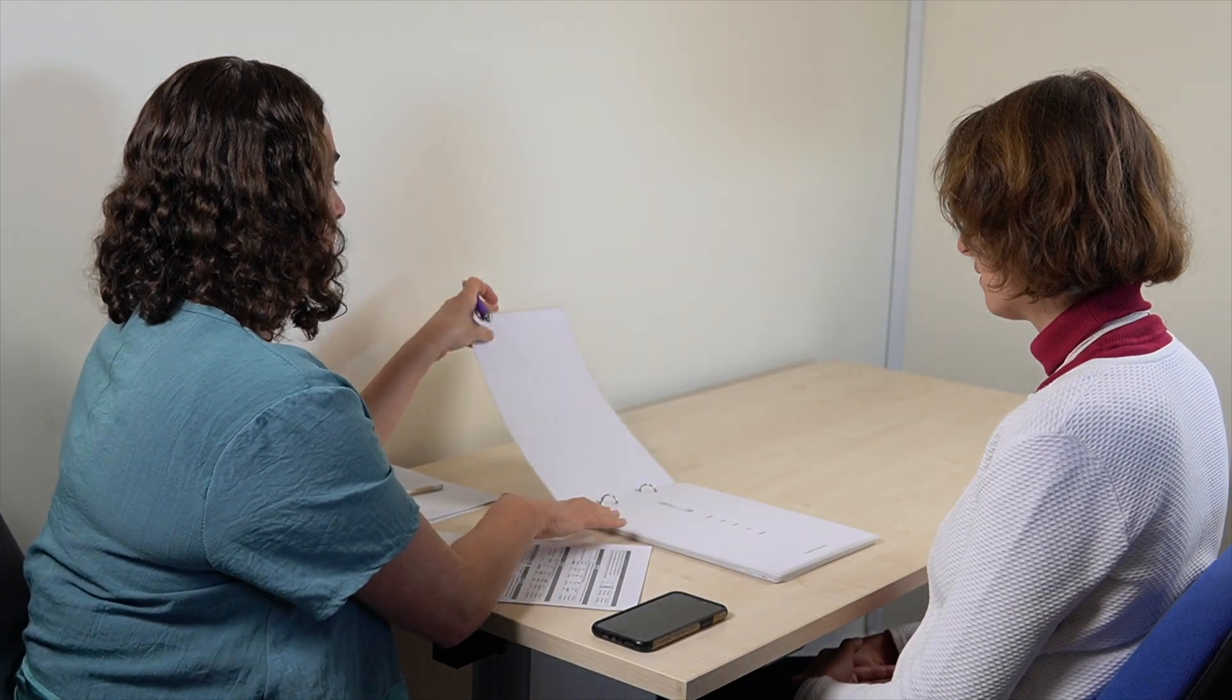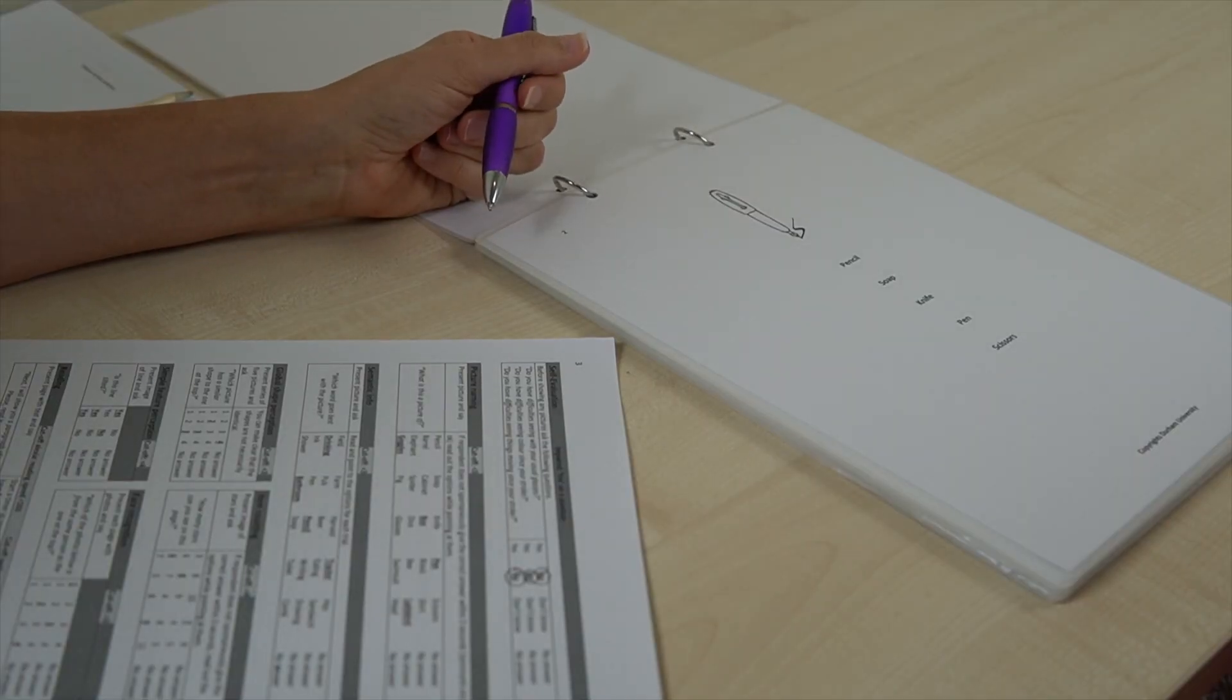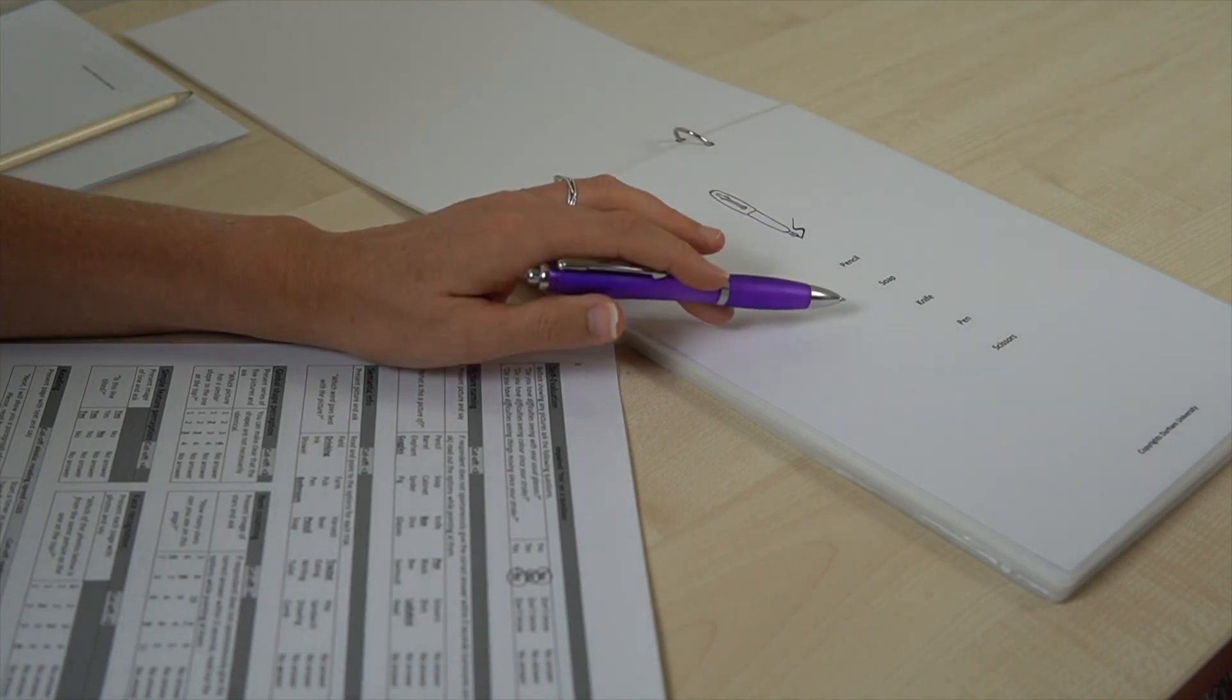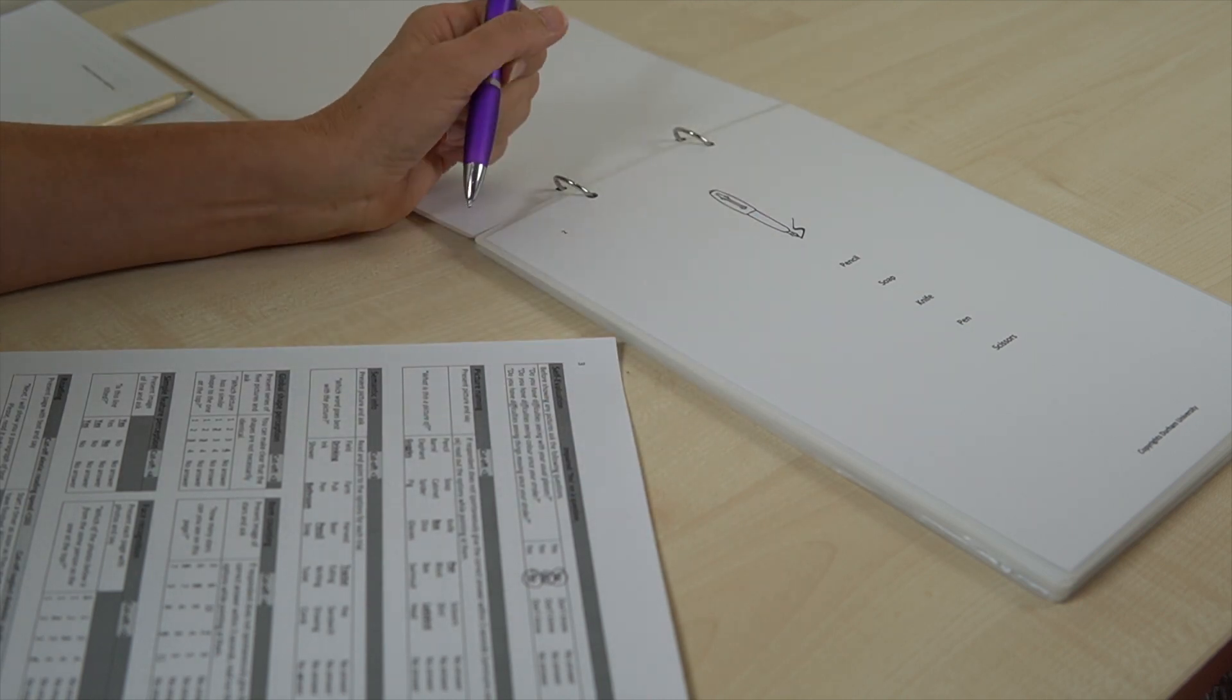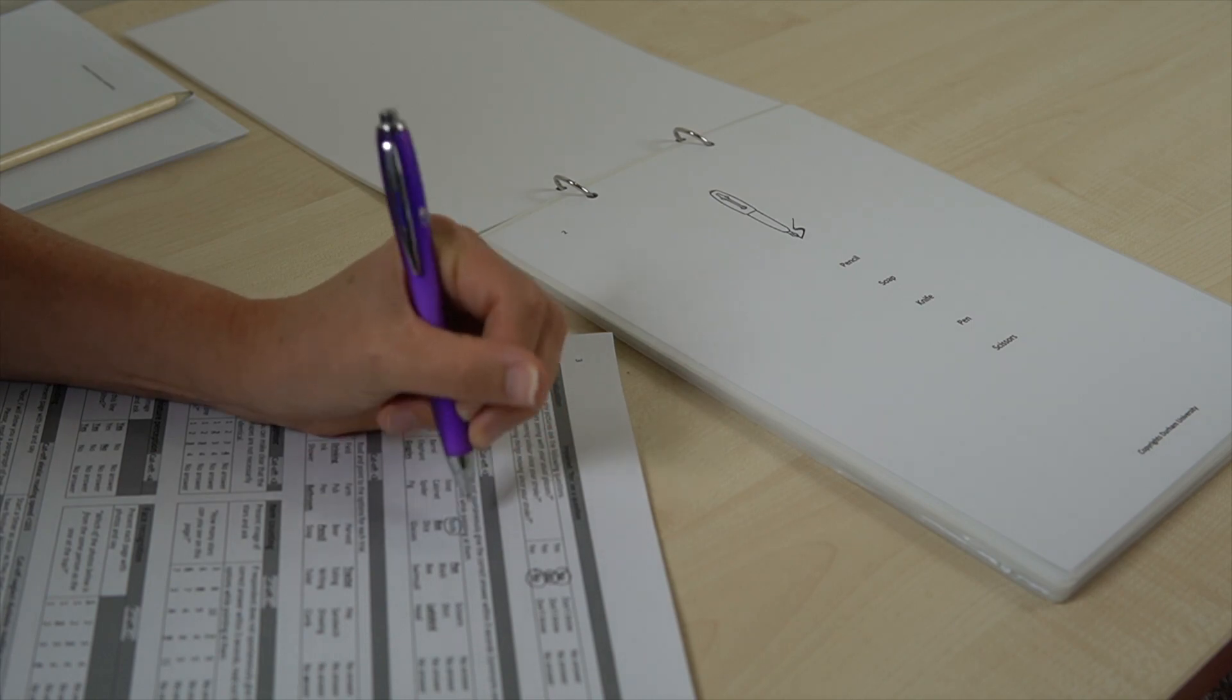So we're going to go through this booklet here. I'm going to show you a picture. What is this a picture of? I don't know. Is it a pencil, soap, knife, pen or scissors? If you don't know for sure, you can take a guess. A knife maybe? Okay.